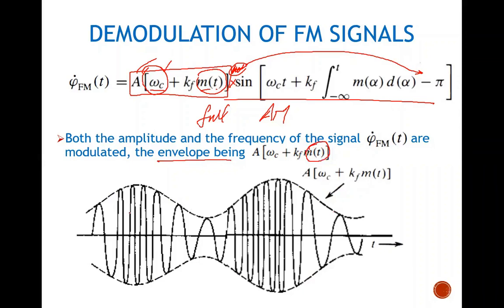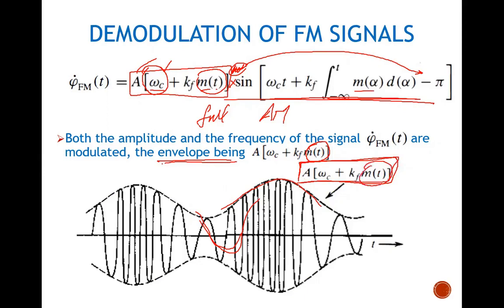The signal would look something like this if m(t) is a sinusoidal signal. The envelope is represented by this expression, with carrier variations dependent upon the amplitude of m(t). There is no negative part of these fluctuations, which is why we can use simple envelope detection to get our signal. Using envelope detection, we obtain this expression, which is dependent upon m(t) — the baseband signal — so we can simply get the demodulated signal m(t).